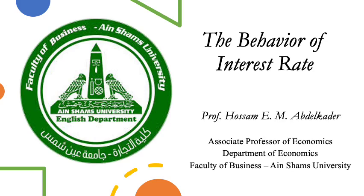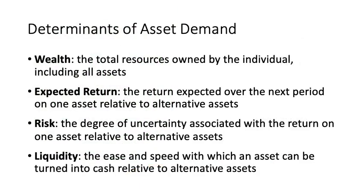In this lecture we will cover chapter five about the behavior of interest rates. Before going to the behavior of interest rates, we should look at what determines asset demand. For any asset, we mainly have four factors: wealth, expected return, risk, and liquidity. When wealth is increasing, the demand for an asset would increase — it is a positive relationship.